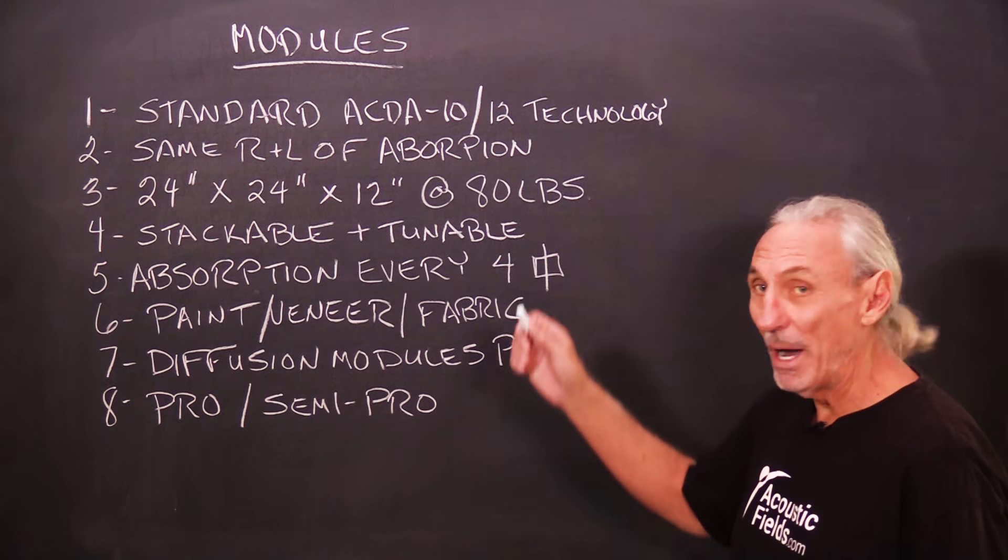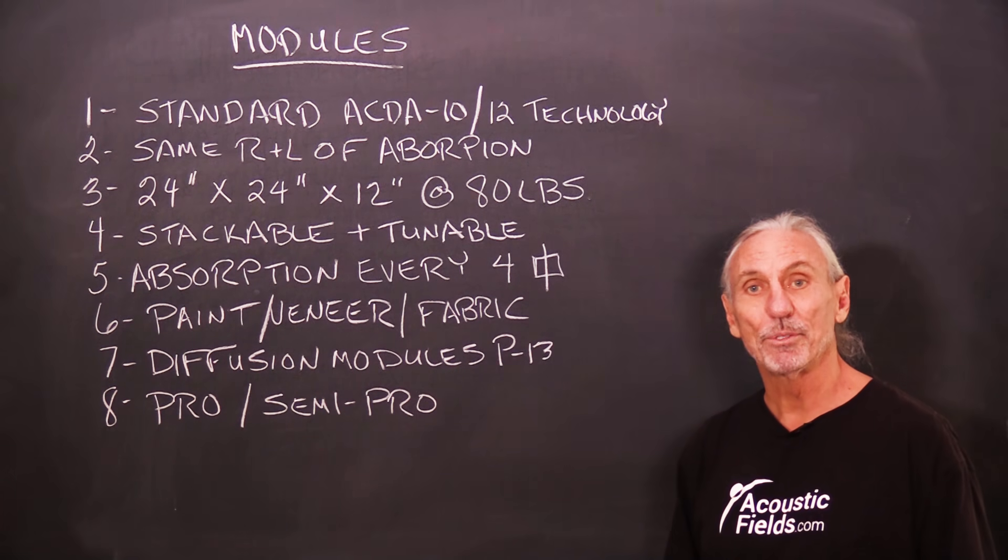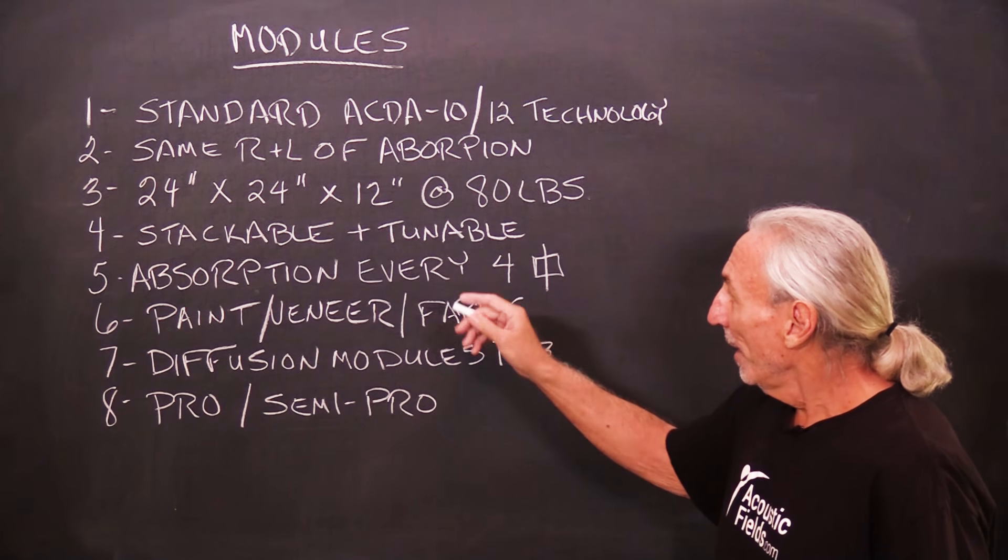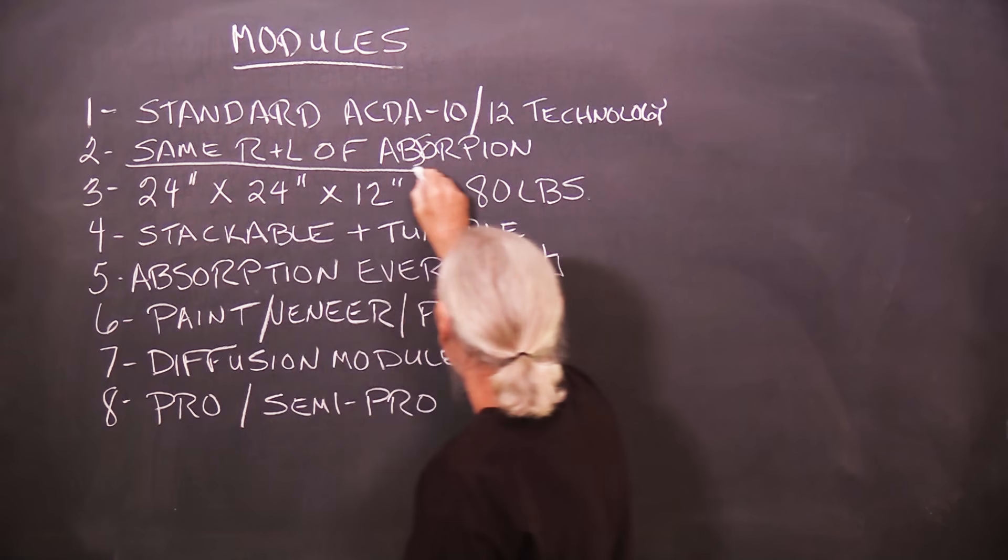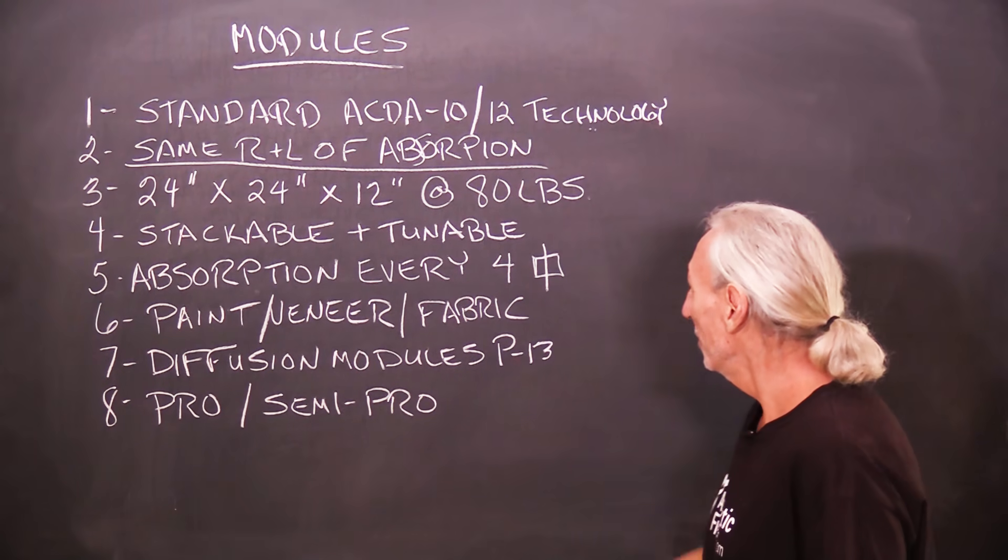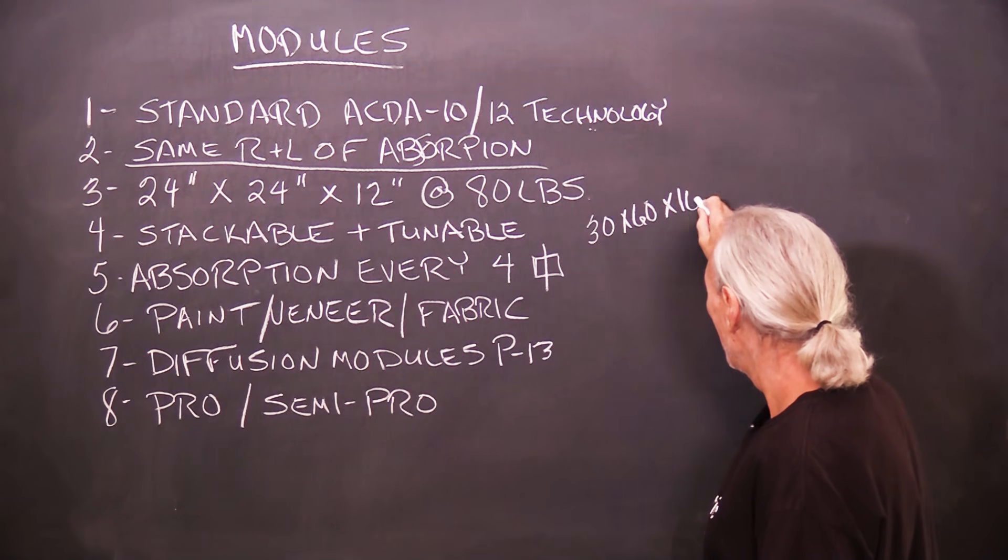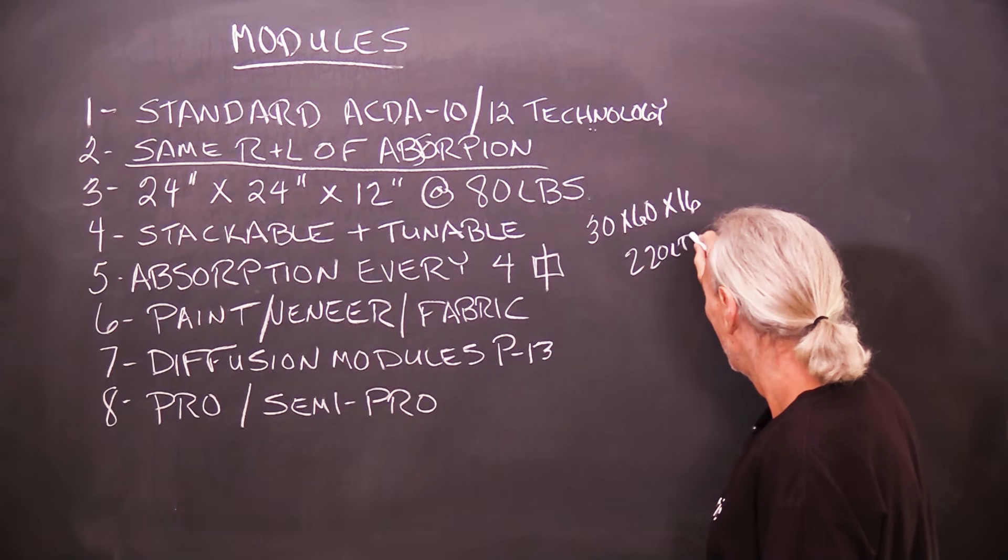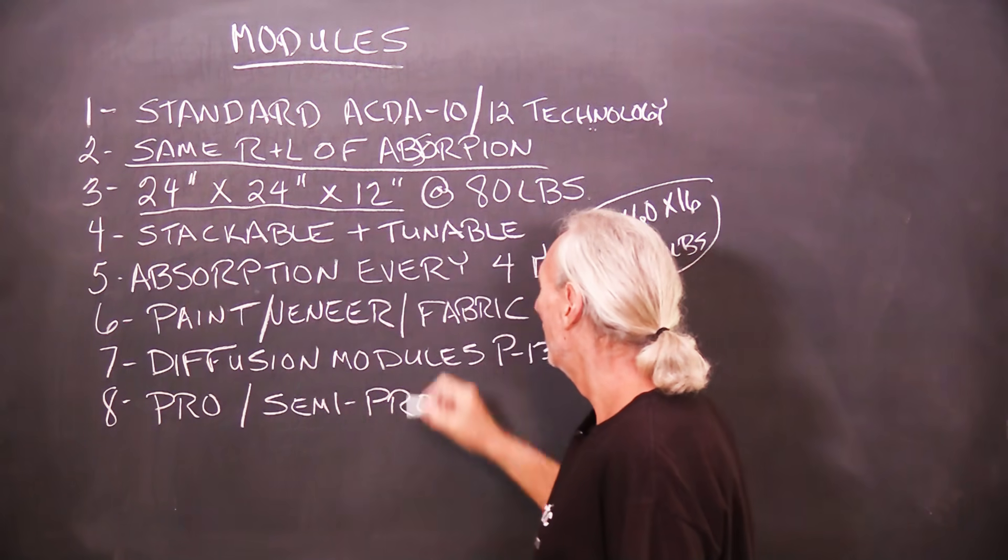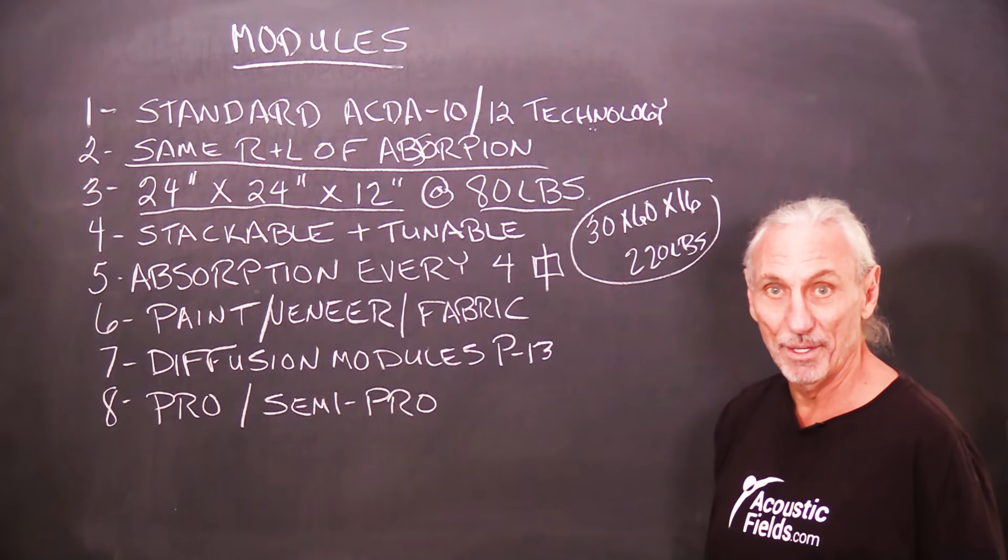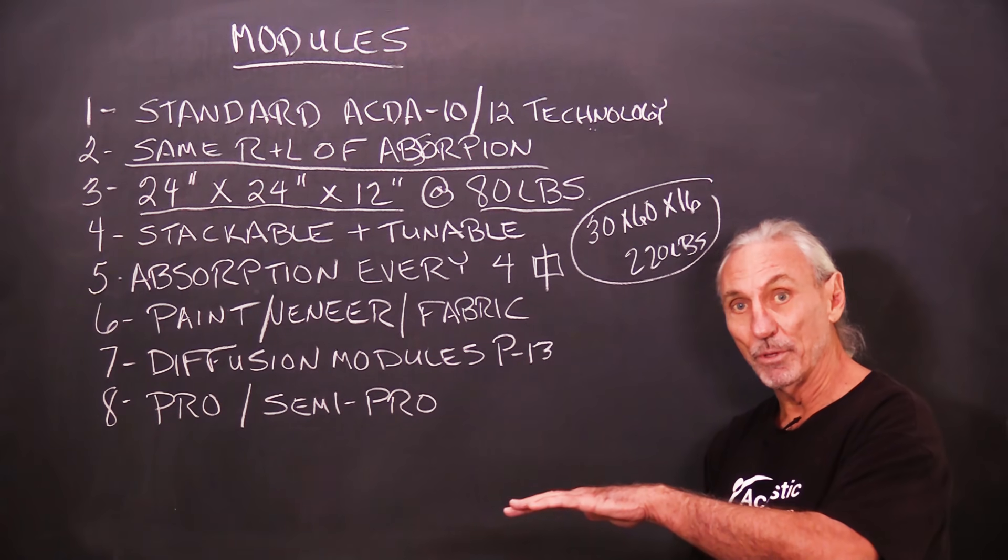So these modules are our standard ACDA10, ACDA12 technology. You can look up the performance curves on the website. And the nice thing about it is they have the same rate and level of absorption as the bigger production units. Now our production units are 30 by 60 by 16 and about 220 pounds. So you can see that 24 by 24 by 12 at 80 pounds is a lot better. 80 pounds is still a lot to move, but it's a lot easier if it's in a two foot by two foot package.